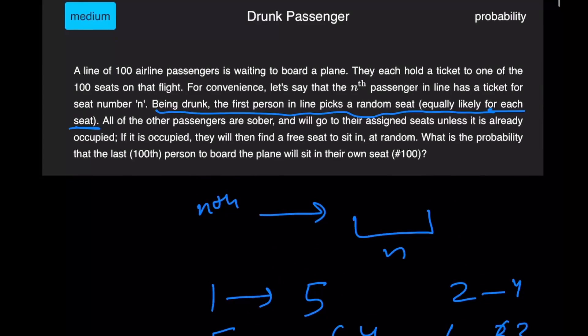Now, what we've been asked is: if this keeps happening, what is the probability that the 100th person gets to sit on their own seat, which would be seat number 100?